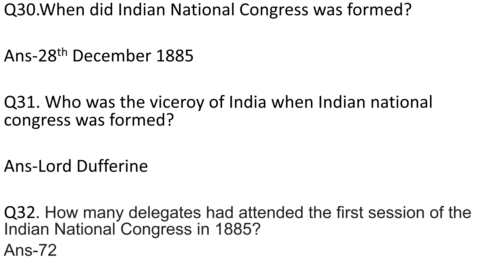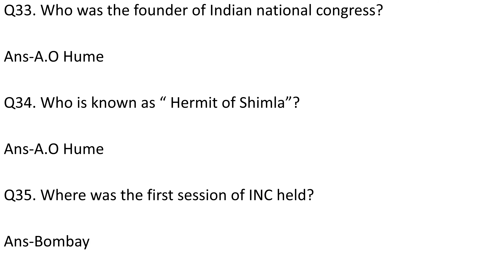Question number 30: When was the Indian National Congress formed? Answer is 28th December 1885. Question number 31: Who was the viceroy of India when the Indian National Congress was formed? Answer is Lord Dufferin. Question number 32: How many delegates attended the first session of the Indian National Congress in 1885? Answer is 72. Question number 33: Who was the founder of the Indian National Congress? Answer is A. O. Hume.